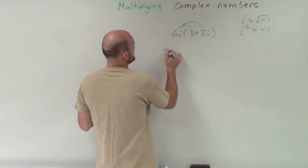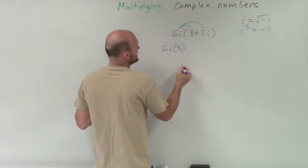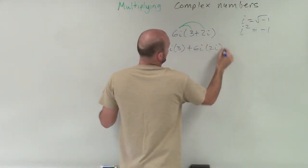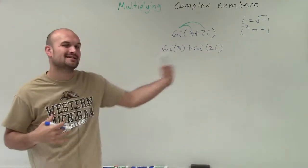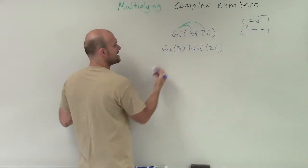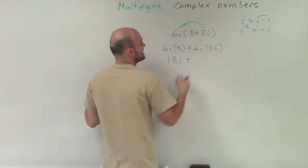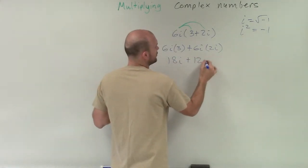Therefore, what I have is 6i times 3 plus 6i times 2i. You've got to make sure you multiply 6i times both terms. 6i times 3 is 18i, and 6i times 2i is 12i squared.